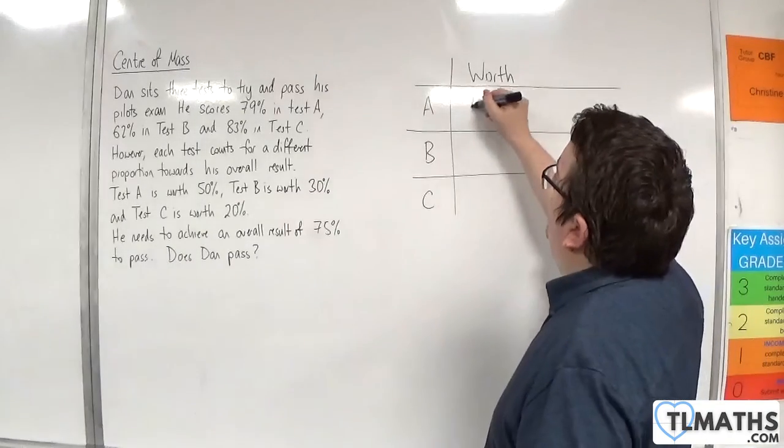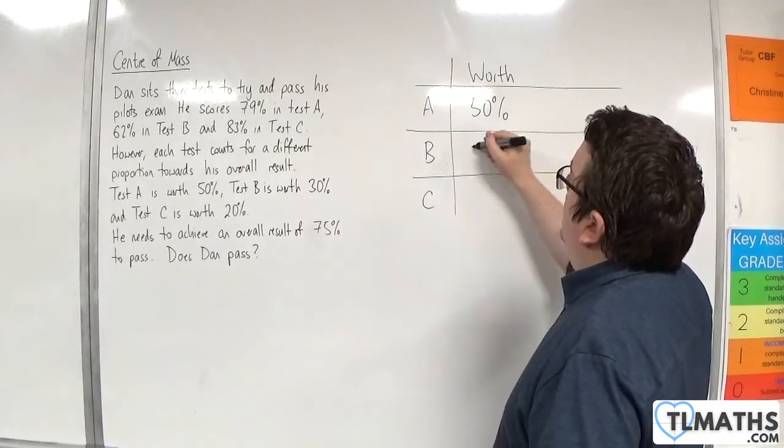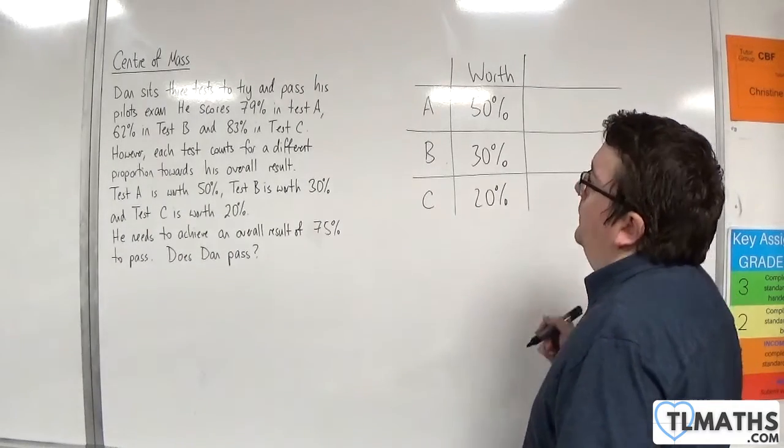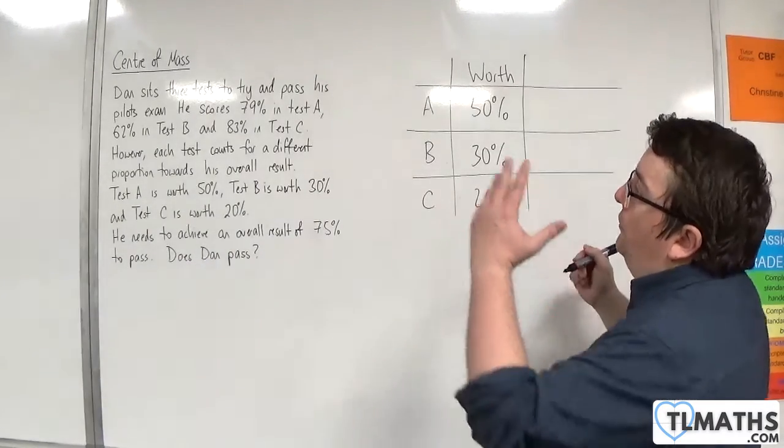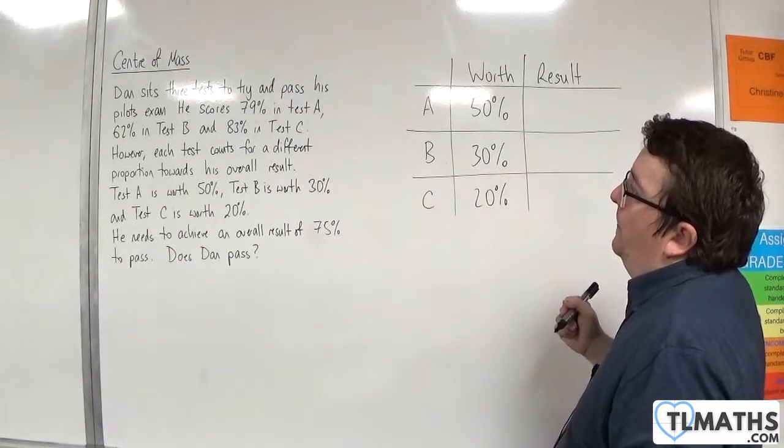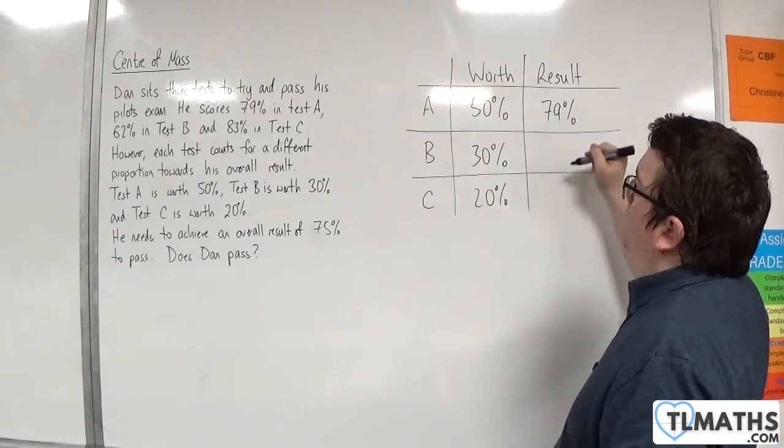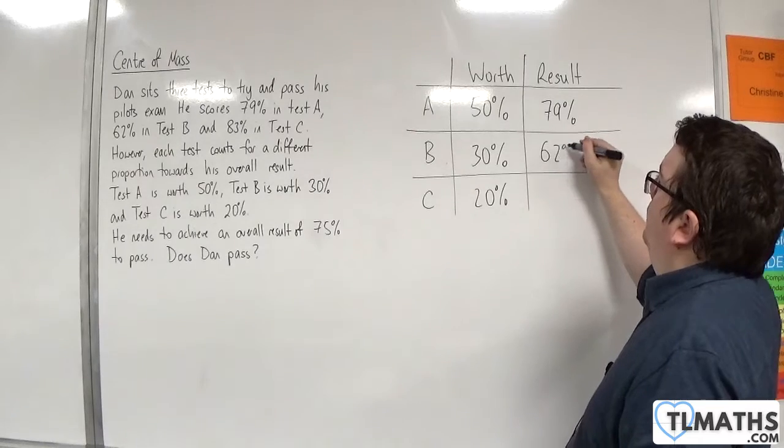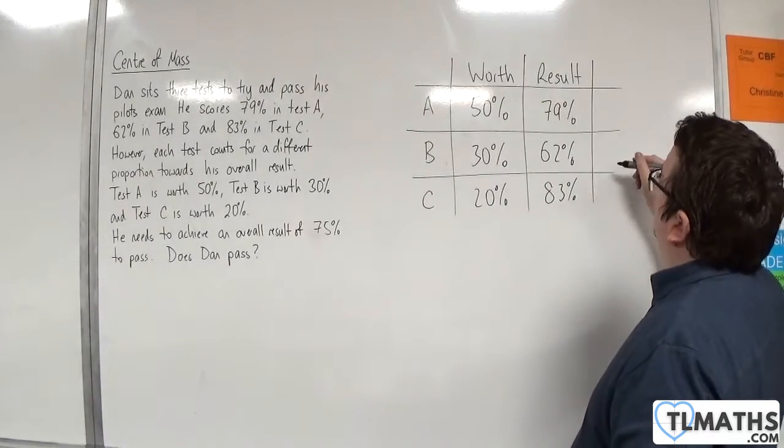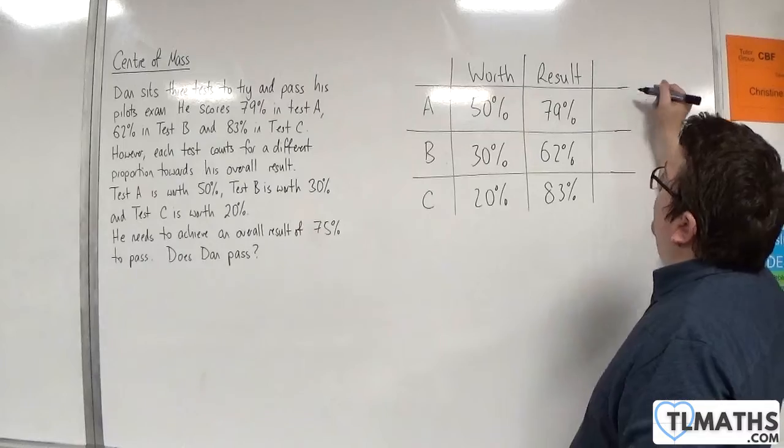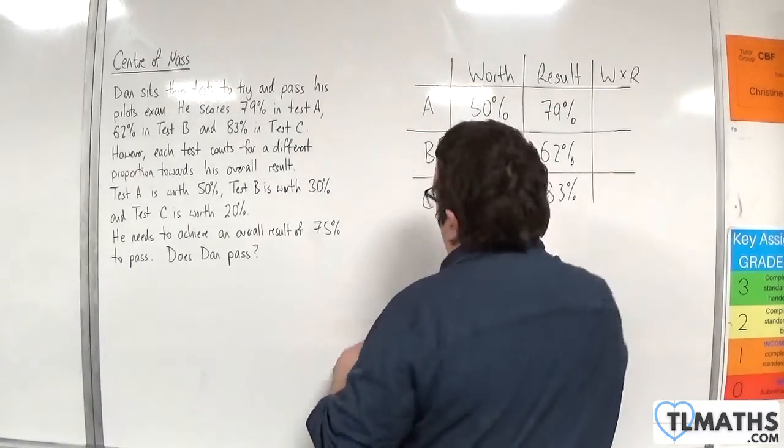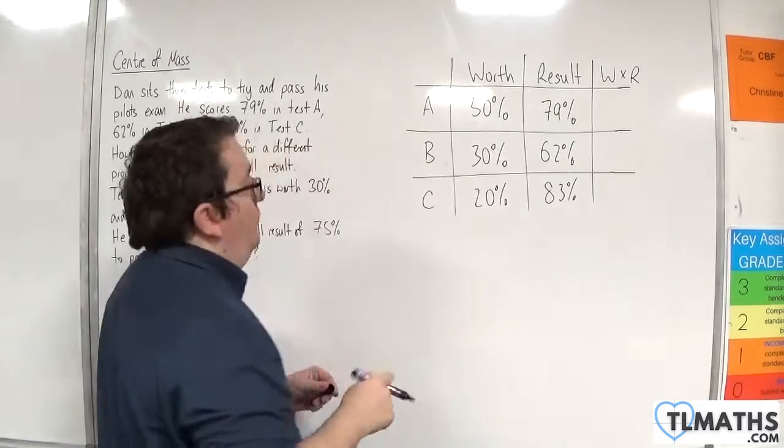Now, in that case, we've got 50%, 30%, and 20%. Now, Dan has a result for each of these. His results are 79%, 62%, and 83%. And what you would do is you would multiply the worth by the result.